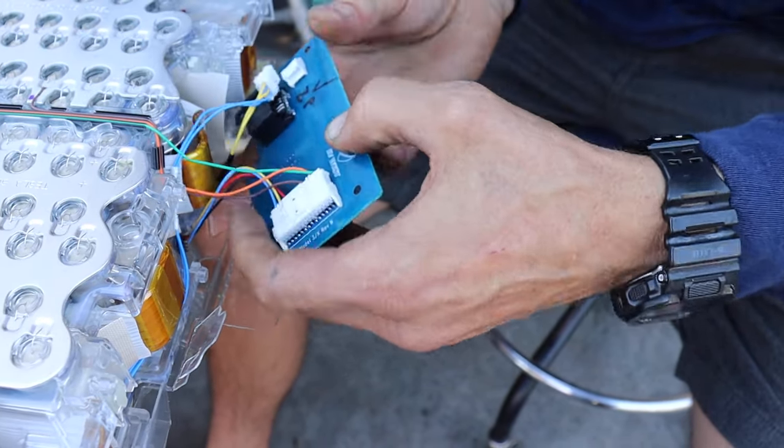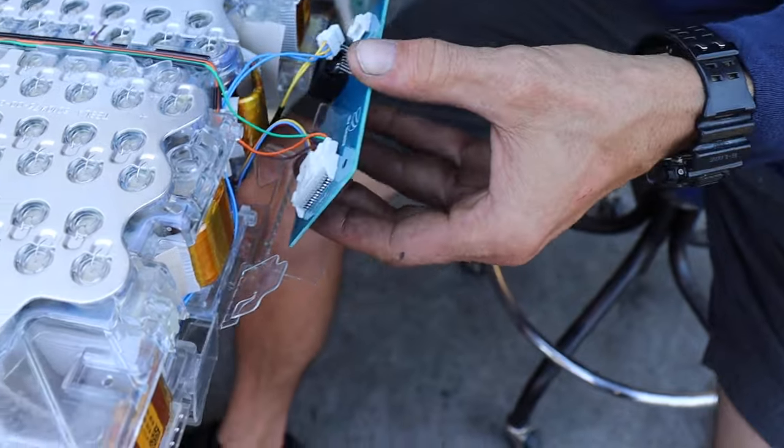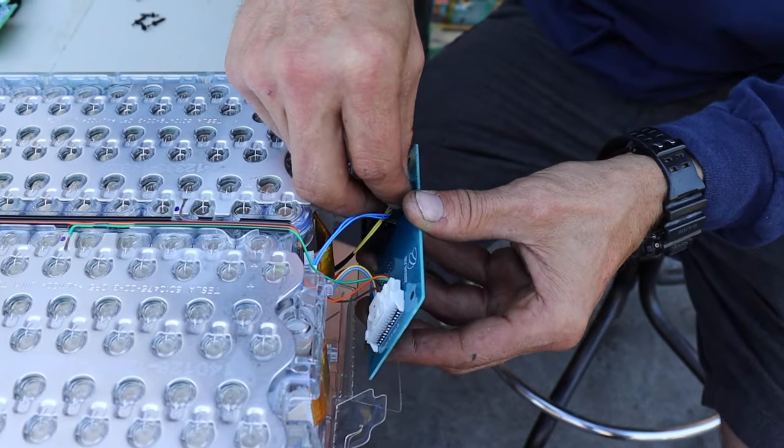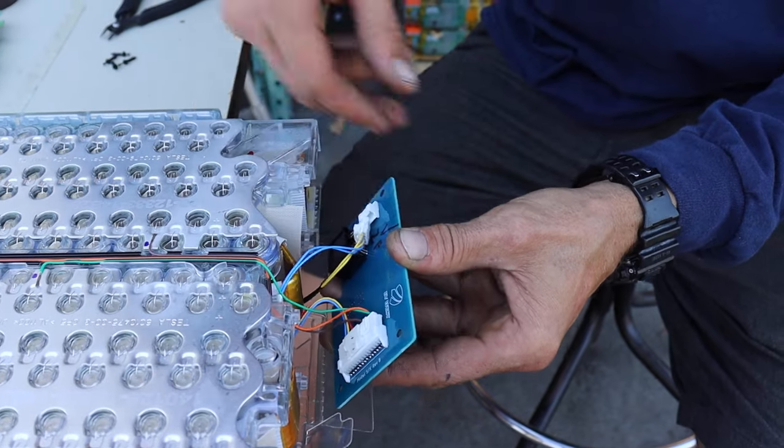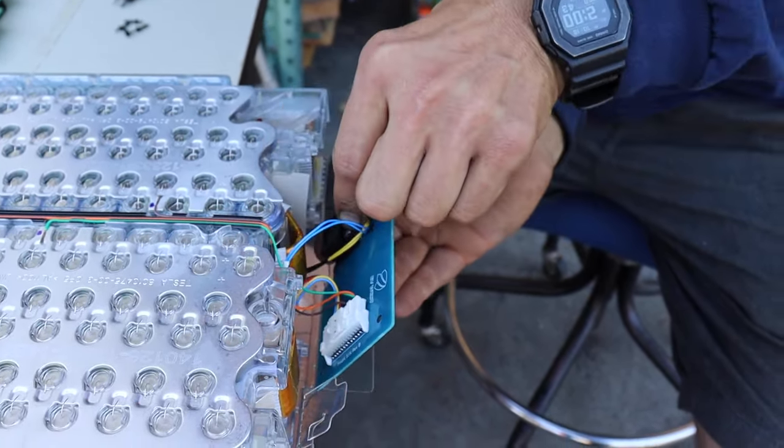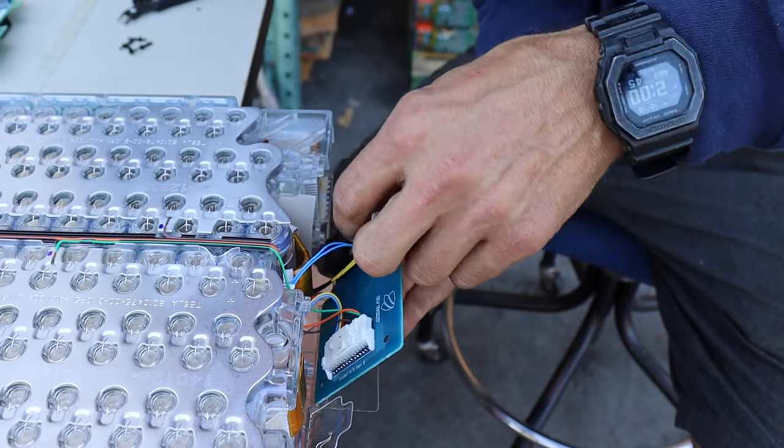There are three revisions on the BMS board for a Tesla module: A, B, and C. You need to ensure that you have the correct board for the module you're working on. See the product page on our website for more information to determine the revision of your Tesla module.